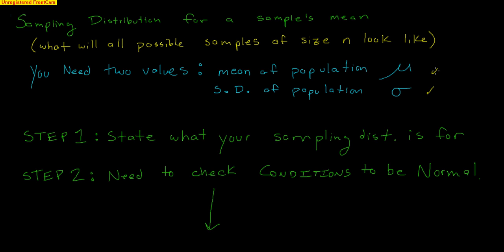Just like with sampling distributions for proportions, we have five steps to follow to understand exactly what a sampling distribution for means looks like. First, you have to state what your sampling distribution is for — something like, this is the sampling distribution for the mean weight of high school boys for a sample of size n — because sample size does change things.